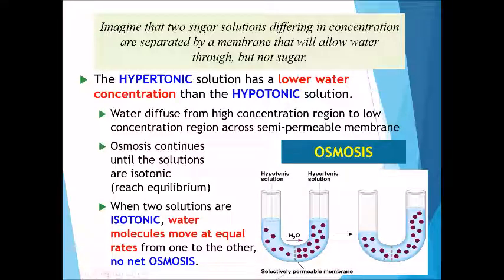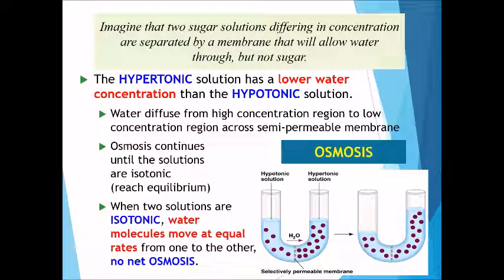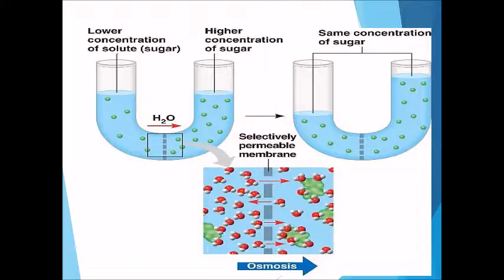When two solutions become isotonic, water molecules are still moving, but they move at equal rates in both directions and there is no net osmosis.